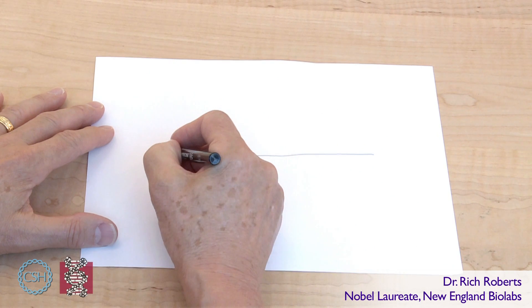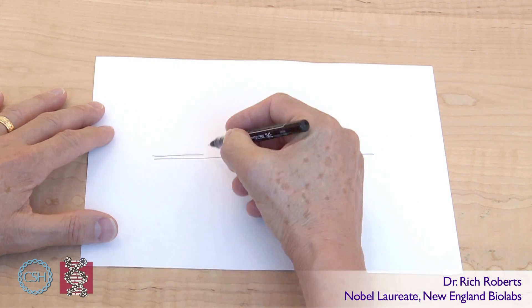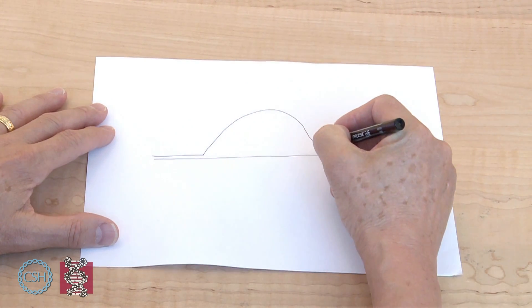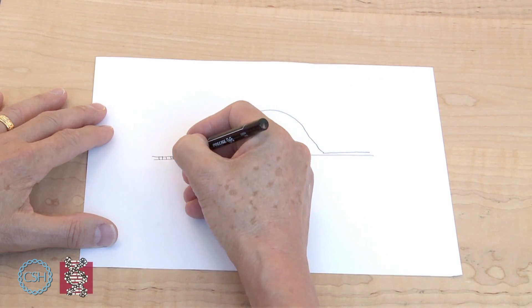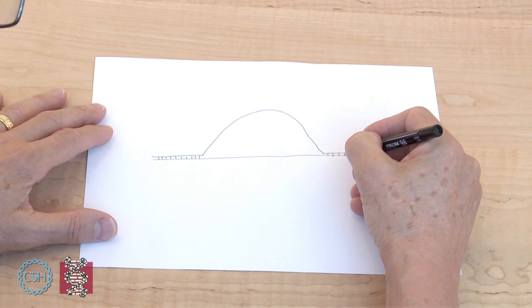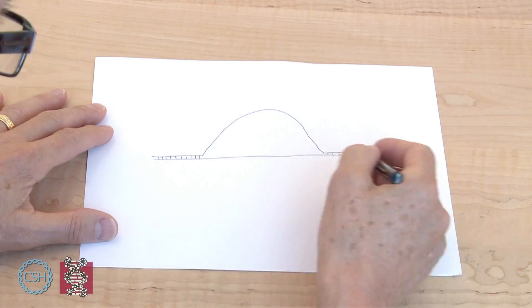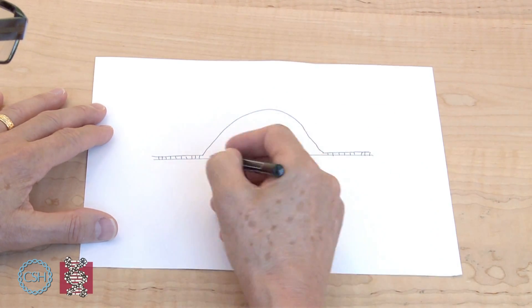So you can imagine this is one strand of the DNA and the other strand of the DNA looks like this. So these are all base pairs coming down here. This is normal DNA. And normally this would be hybridized to this.